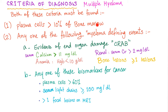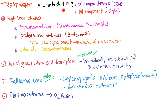To diagnose multiple myeloma, both criteria must be present. Criterion one: plasma cells greater than 10%. Criterion two: any one of the myeloma-defining events. CRAB stands for: C — calcium greater than 11; R — renal failure, serum creatinine greater than 2; A — anemia, hemoglobin less than 10; B — bone lesions, one or more on X-ray. Additional biomarkers include plasma cells greater than 60%, serum free light chain ratio greater than 100 mg/dL, or more than one focal lesion on MRI.